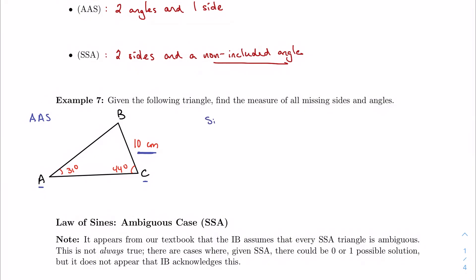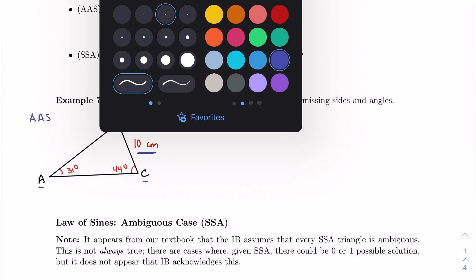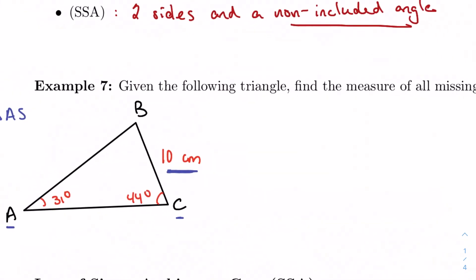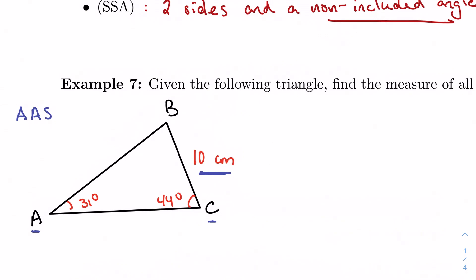So the easiest place to start, I'm actually going to zoom in a little bit just so I have some extra room to work, but the easiest place to start is by finding the third angle. Because we know that the sum of the three angles in a triangle add up to 180. So I've got 31 plus 44, which is 75, plus B, which is the angle that's missing, is equal to 180. So I know that B is 105.